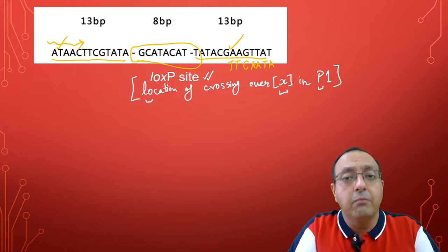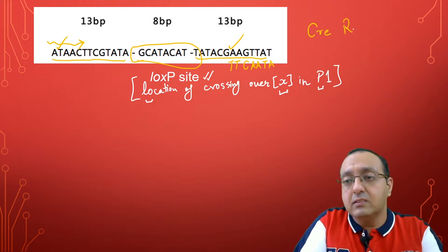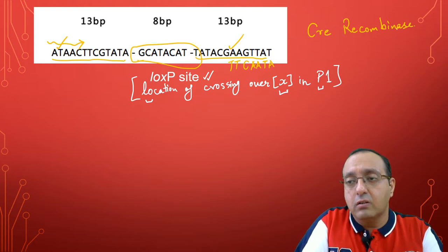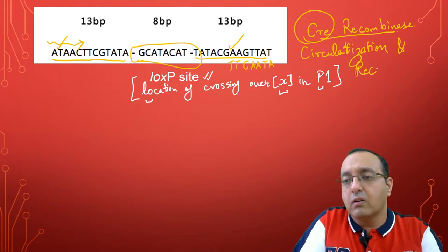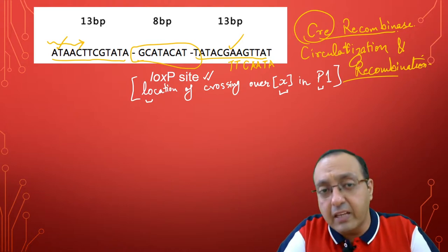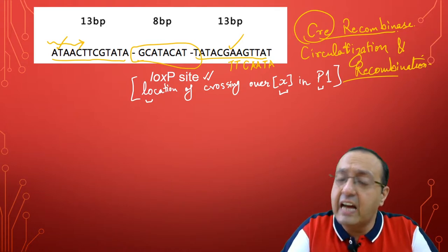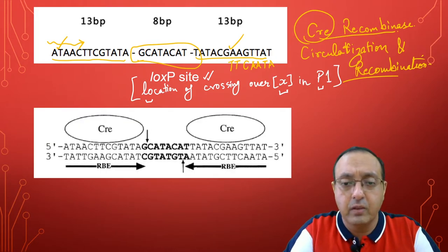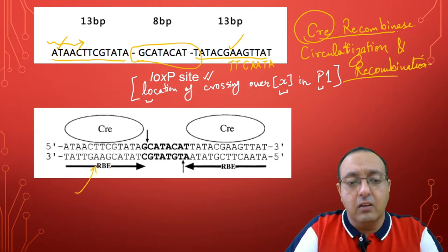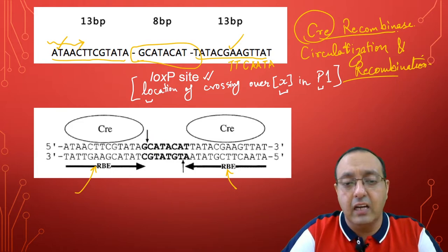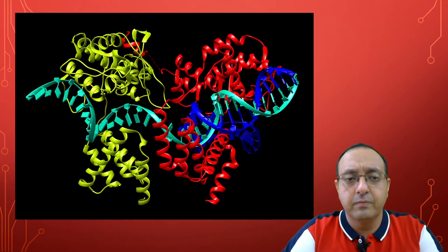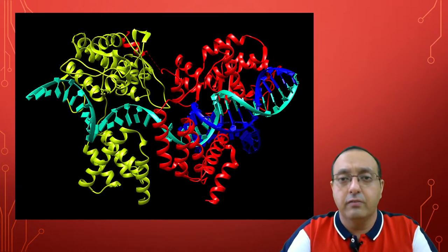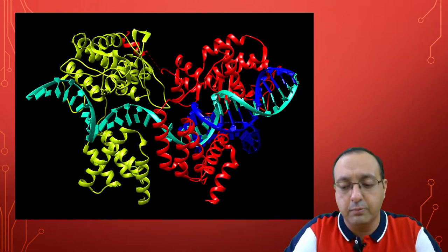Recombination is mediated by a recombinase called the CRE recombinase, which is also produced by the phage. CRE stands for Circularization and REcombination. The CRE recombinase can lead to both excision and integration of DNA. The structure shows the recombinase binding end and the eight base pair spacer where cleavage occurs via homologous recombination. This is the structure of CRE recombinase bound to its 34 base pair sequence — two 13 base pair repeats and an eight base pair spacer.